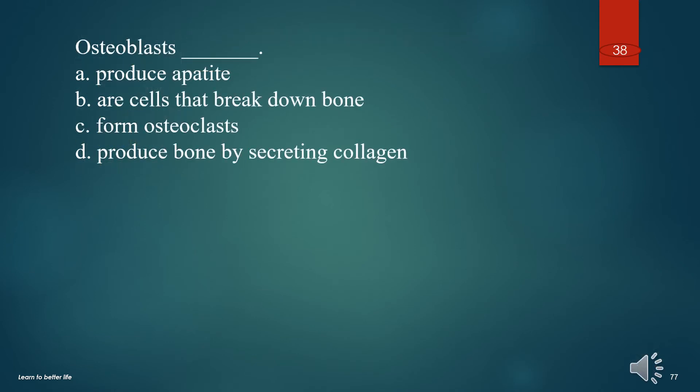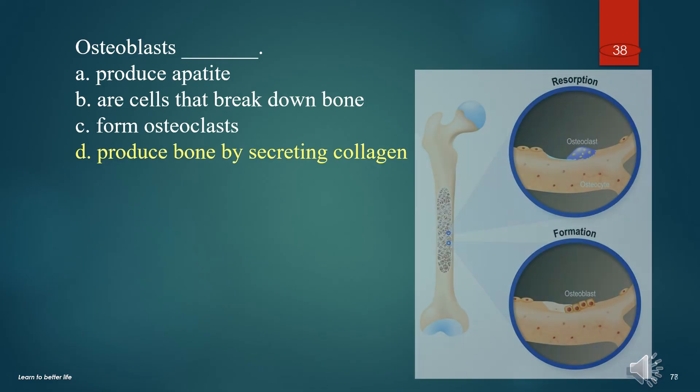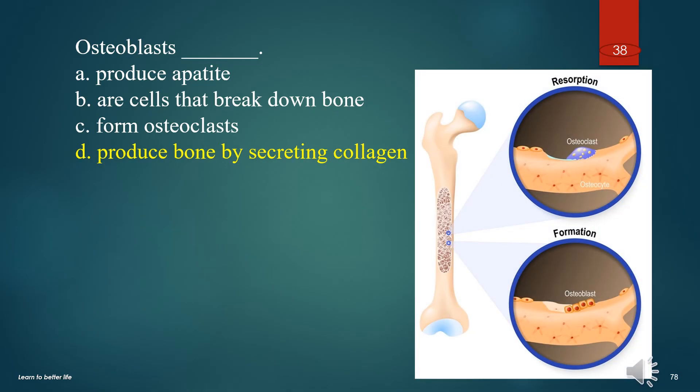Osteoblasts: A. Produce appetite. B. Are cells that break down bone. C. Form osteoclasts. D. Produce bone by secreting collagen. The answer is D. Produce bone by secreting collagen.